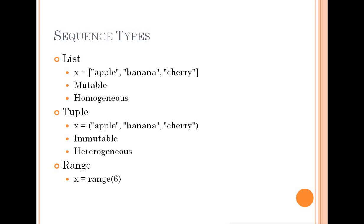A list is homogeneous — it stores the same type of data. A tuple is immutable and can be heterogeneous — you cannot change its values once set, but you can replace or add items in a list.